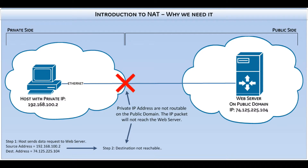A Class A, B, or C private IP address is not routable on the public domain. As pictured here, when the host requests data from the public web server, the request fails. In order for the host to access the web server, it needs to have its traffic routed and its source IP address modified by a routing device.